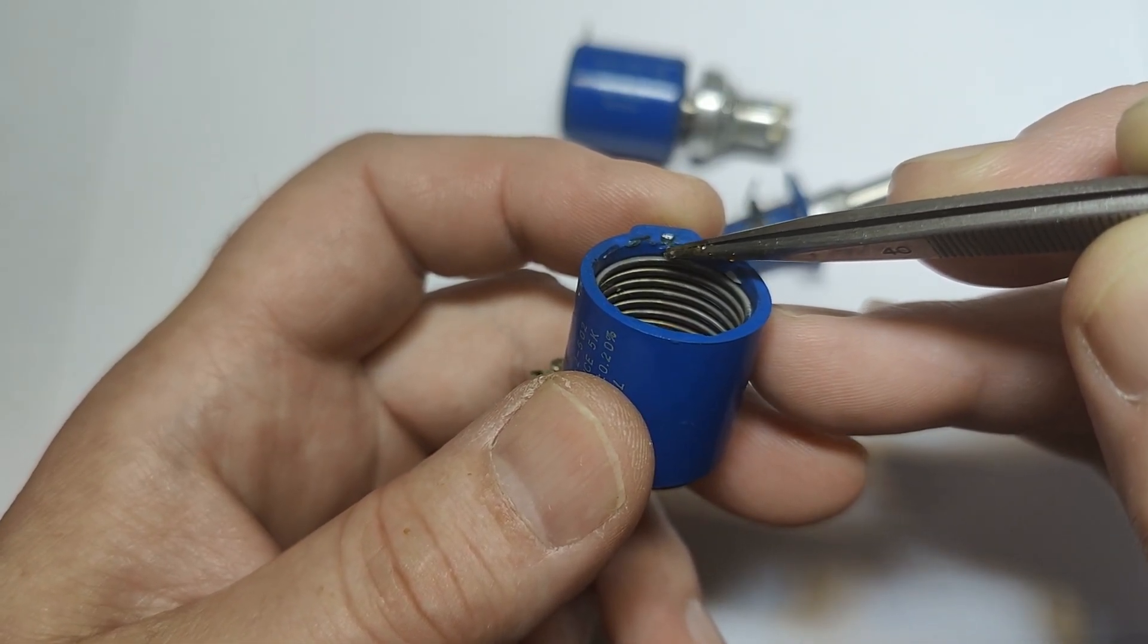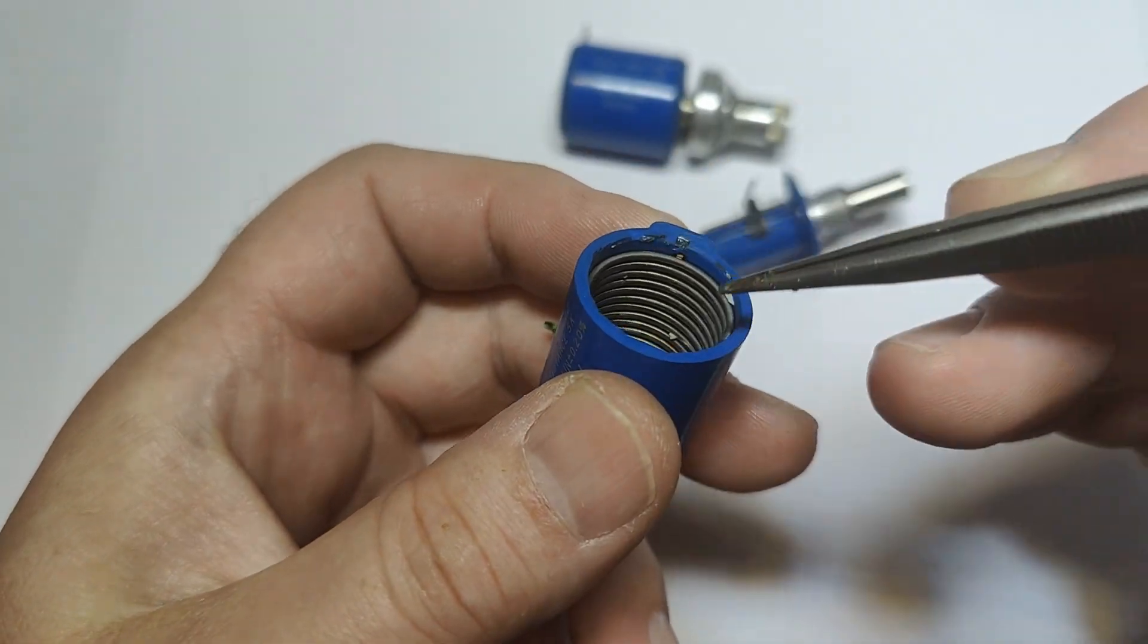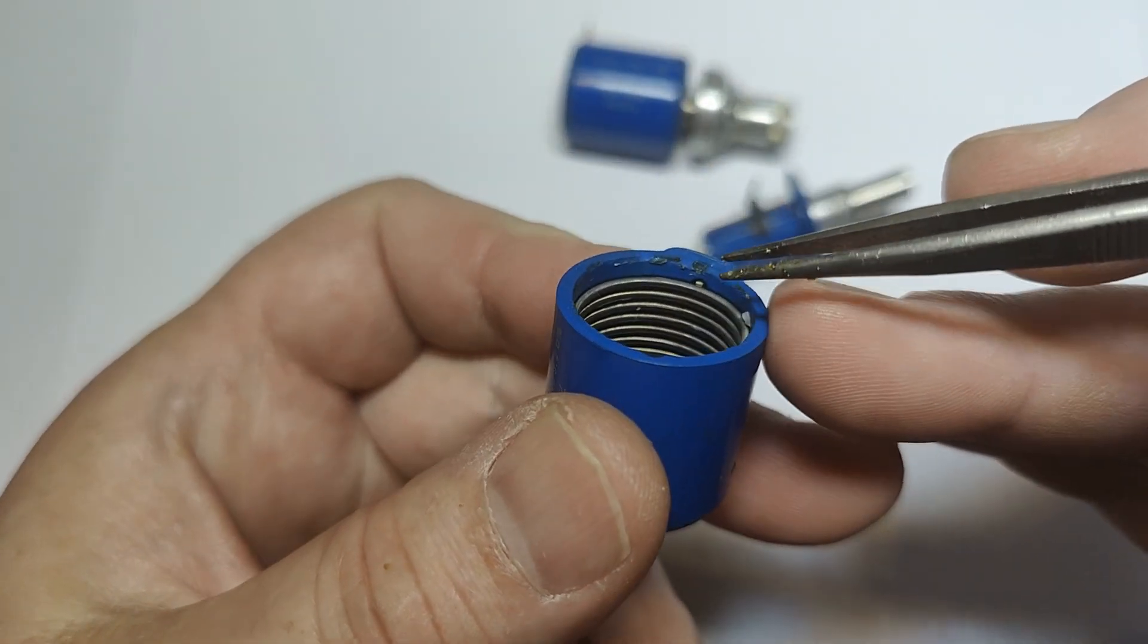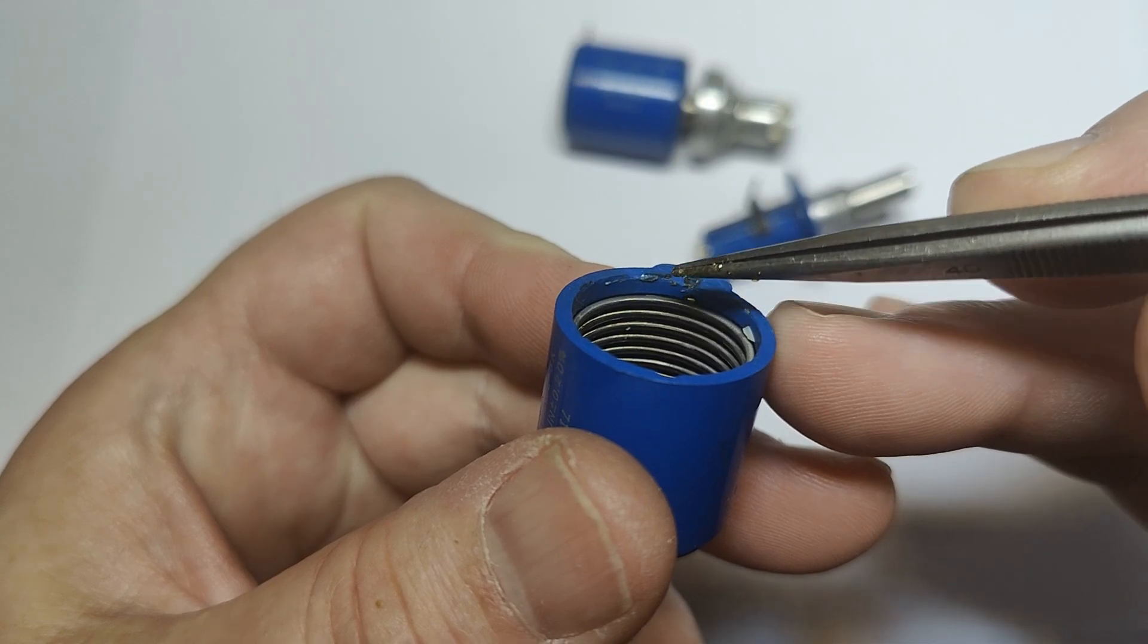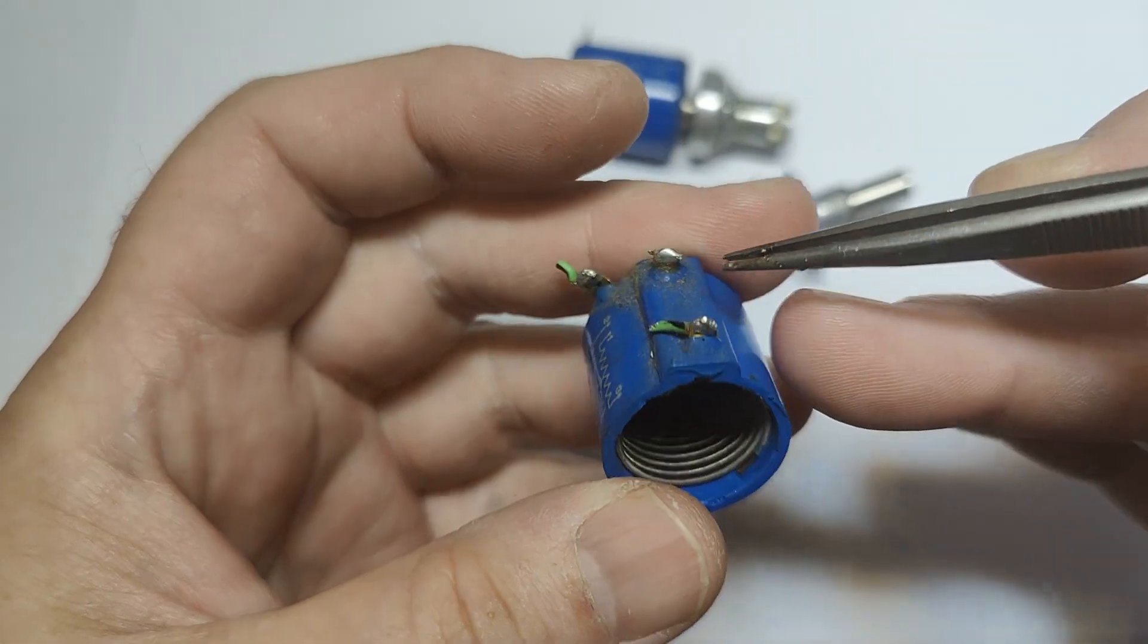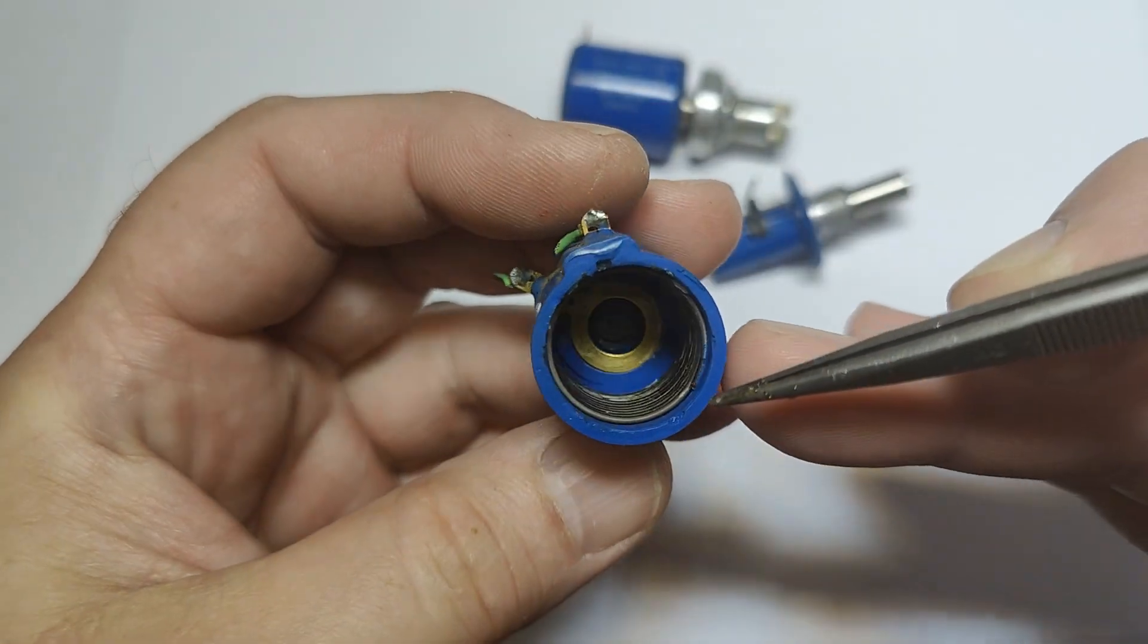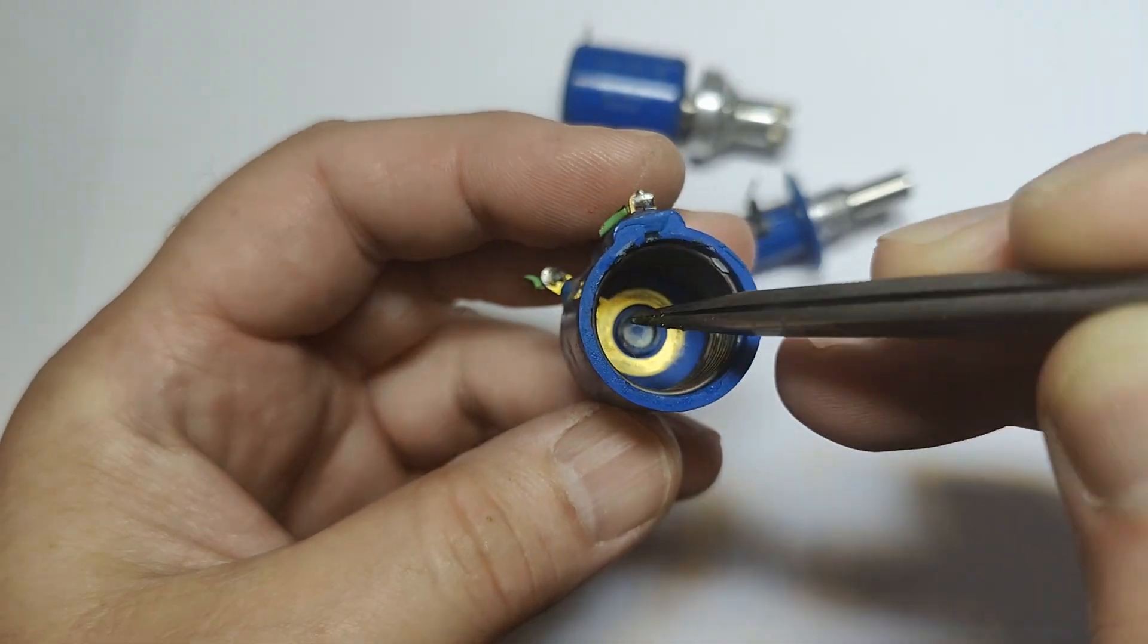So this is actually where the resistor element starts and then it goes 10 times around with thin windings around this, and then there's another contact point and it actually continues another half a turn down here.